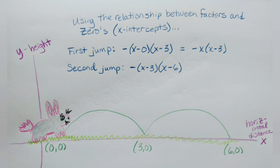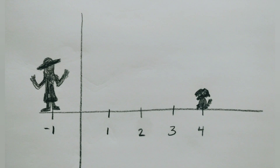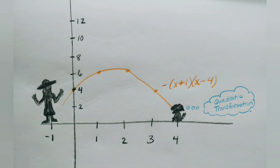Miss V threw a treat in the air. Tchaikovsky needed to figure out an equation that would land the treat in her mouth. She used the zeros to write an equation in factored form. But then she thought, aren't there more parabolas that would have the same zeros?